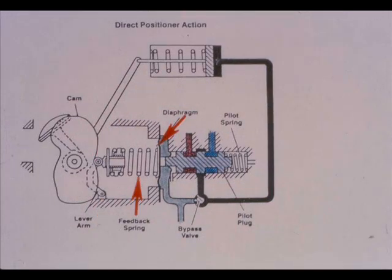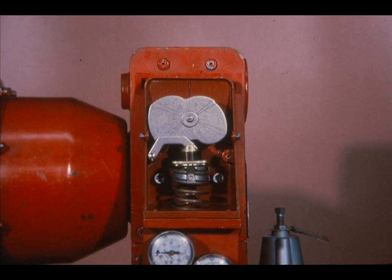The valve plug continues to move until the feedback spring force balances the force of the instrument signal on the diaphragm. In the new balanced state, the valve plug is positioned in a programmed relationship to the instrument signal, governed by the cam. The cam is the intermediate element in the feedback mechanism between the actuator and the feedback spring. Its profile determines the relationship between valve plug position and the control signal, providing linear, split range, or equal percentage control characteristics.